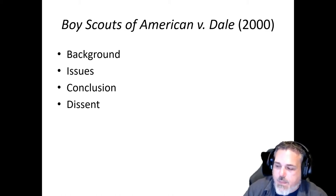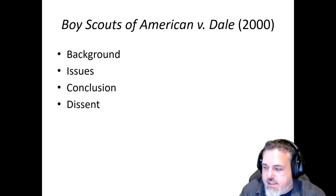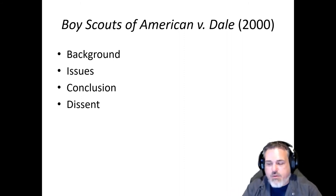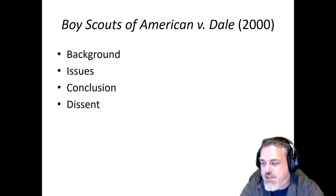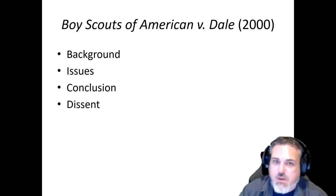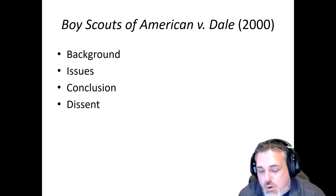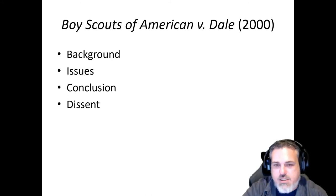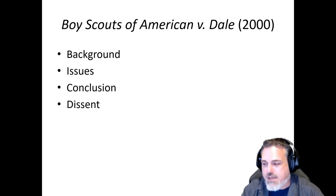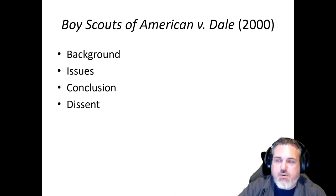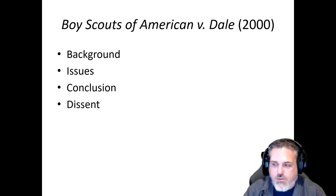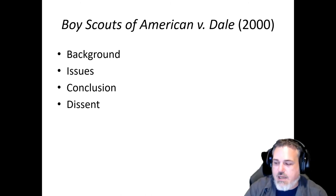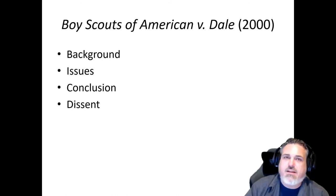Justice Stevens dissents. He points out a nuance in the Boy Scouts' position: while the scouts claim they teach members to be morally straight and clean, they also specifically state that sex education is not to be taught by the scouts — that's for the home and schools. Stevens argues you can't claim morally straight and clean means disapproval of homosexuality while simultaneously holding that you don't discuss anything involving sex, since identifying as homosexual does carry sexual connotations.